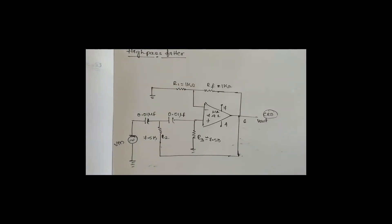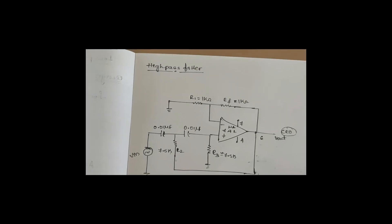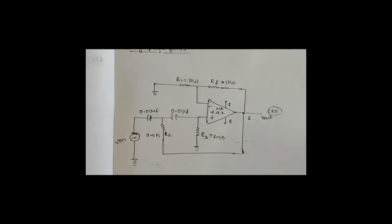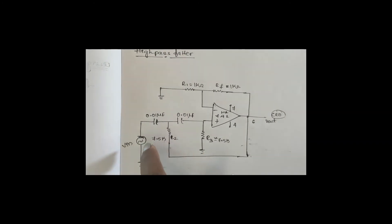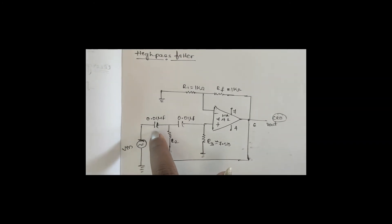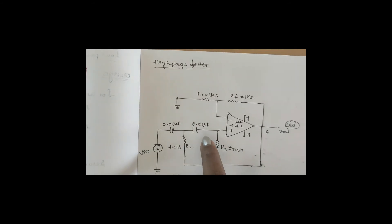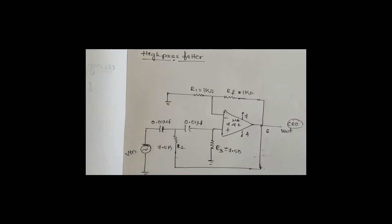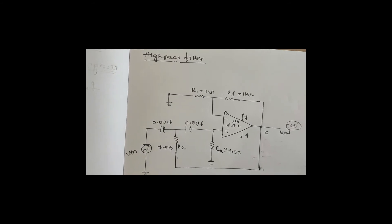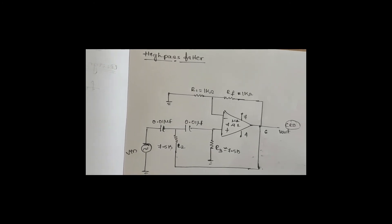In connection with the same experiment, there is a second part: the high-pass filter. The slight change from the low-pass to the high-pass filter is to replace the capacitor C1 with resistor R2, and replace resistor R3 with capacitor C2. Simply interchanging the positions of C and R gives you a high-pass filter.